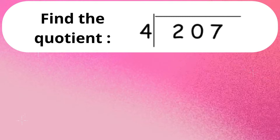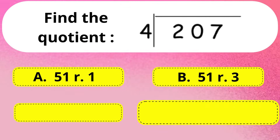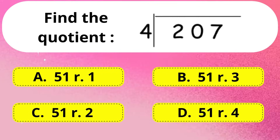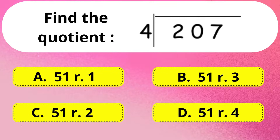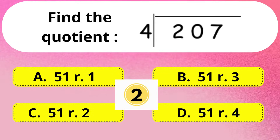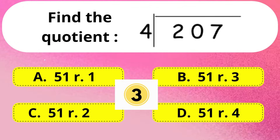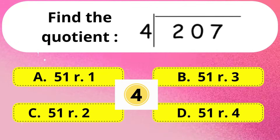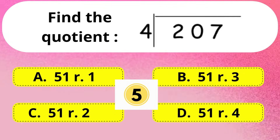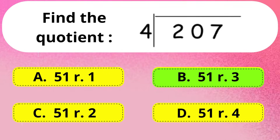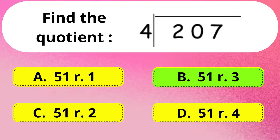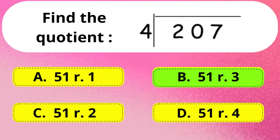Next question. Find the quotient. The right answer is Option B: 51 as the quotient and remainder will be 3.